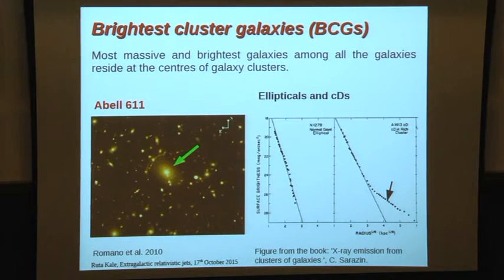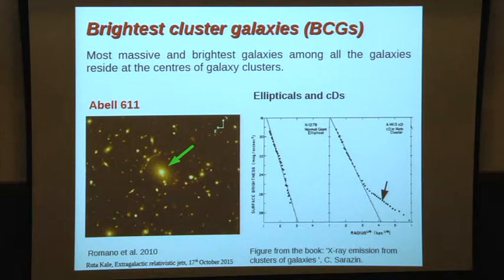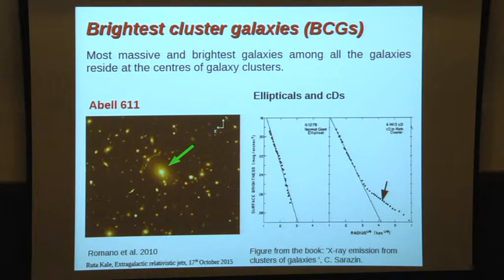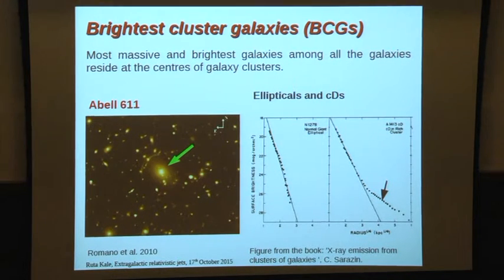Brightest cluster galaxies are the most massive and brightest galaxies in the universe, and they all happen to reside at the centers of galaxy clusters. Here is one example of an Abell cluster — as soon as you see the optical image, you'll make out a very bright, massive galaxy at the center that has evolved by accreting other galaxies and mass. These cluster-center galaxies could be massive elliptical galaxies or an even more massive class called central dominant, or CD galaxies.